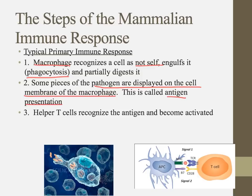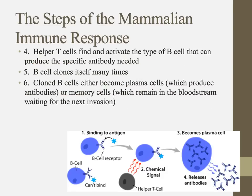The macrophage destroys the pathogen and wears it on its outside as an advertisement that something is wrong. Helper T cells come along, recognize that antigen on the macrophage, and become activated. Helper T cells are exactly what they sound like — just helpers. Once they figure out what pathogen it is, they run around to find and activate the specific B cell that can produce the right antibody.